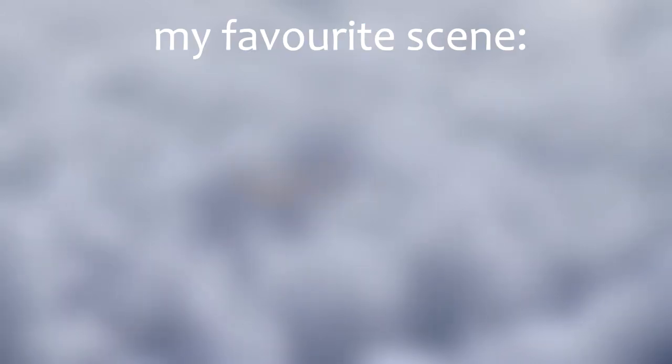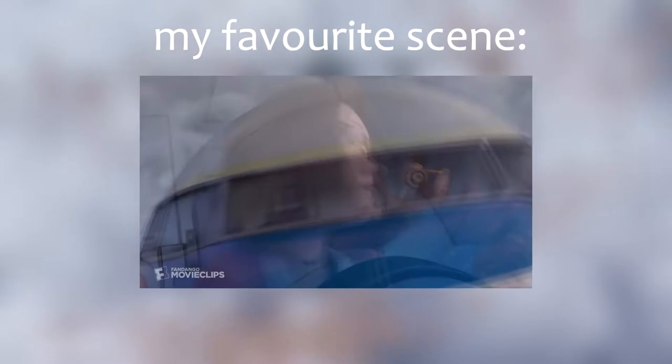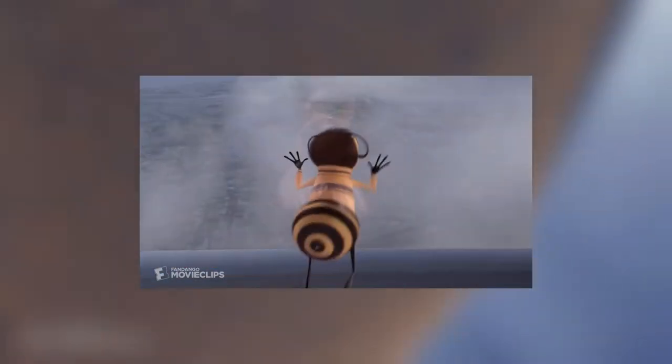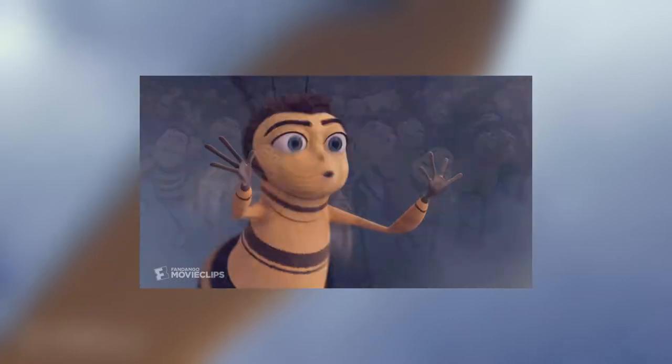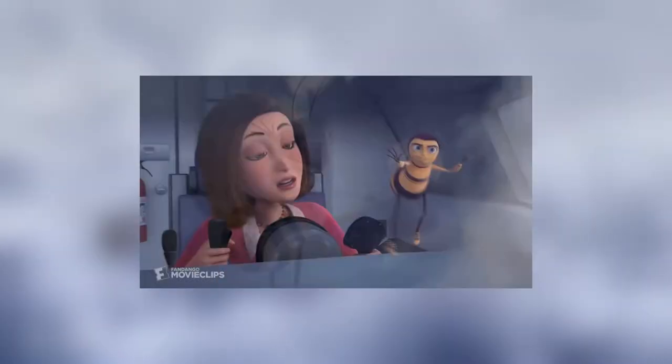My favourite scene in Bee Movie is the plane landing sequence at the end of the film. This is where Vanessa and Barry have to land the airliner with the help of the pollen jocks after Barry kills the two pilots with an inflatable life raft. This scene has always fascinated me, and with all this time spent in lockdown because of Covid-19, I've decided I'm going to work out if this scene is possible.